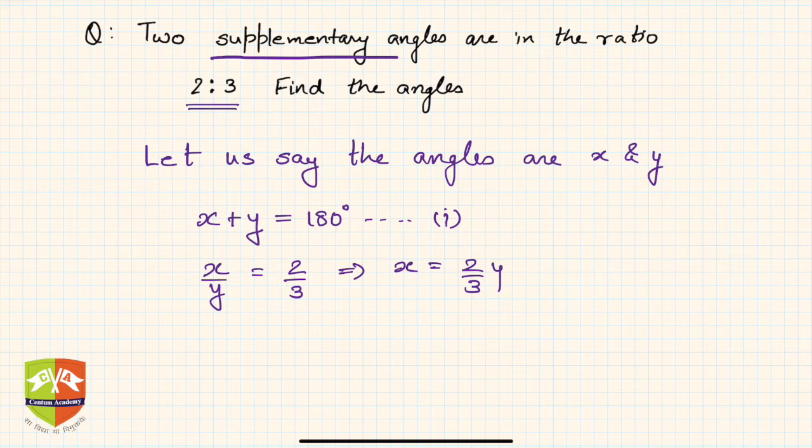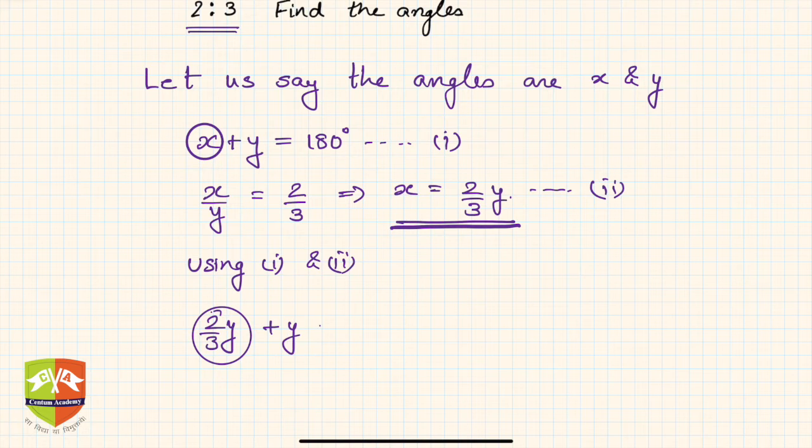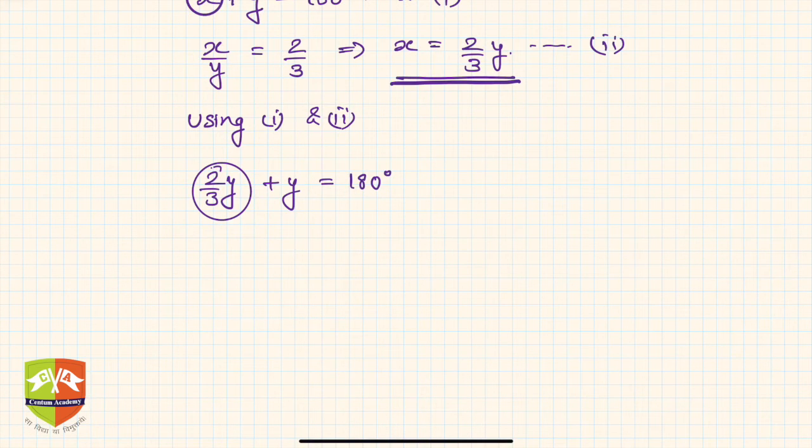Now using equations 1 and 2 together, substitute y or x in the first equation. So x plus y was 180. Now we got x is 2 by 3 y, so I can write 2 by 3 y instead of x plus y equals 180 degrees. Now you can take y common, so y times 2 by 3 plus 1 equals 180 degrees.